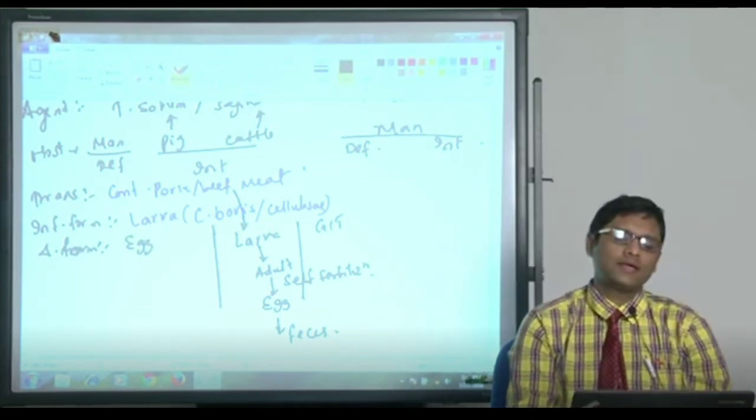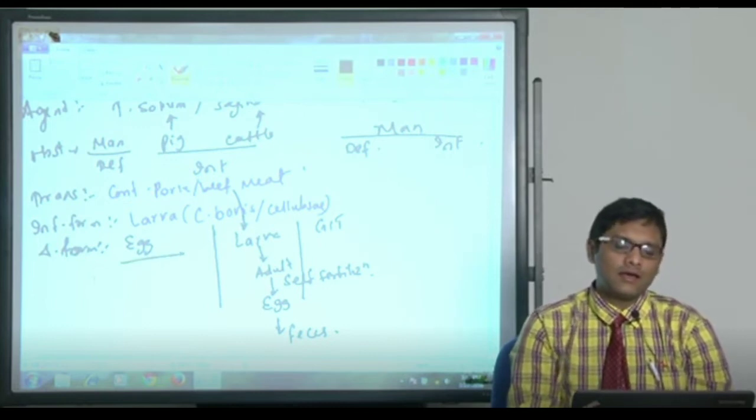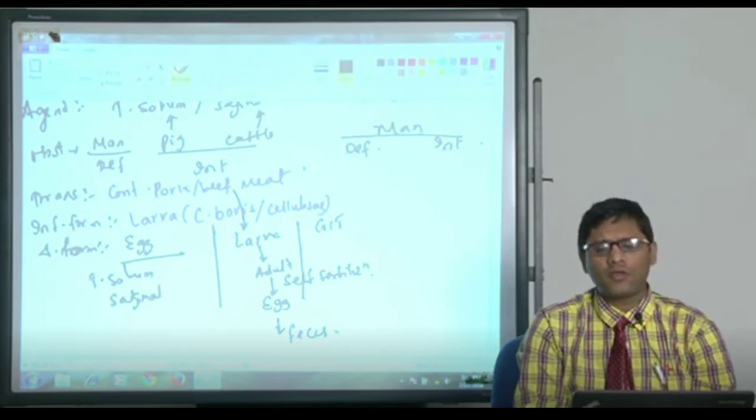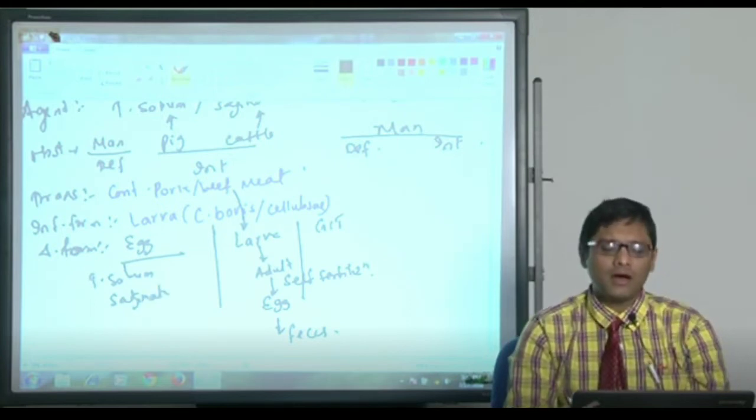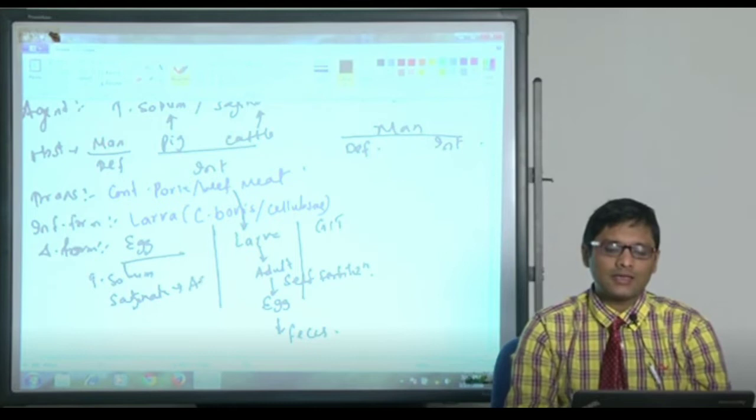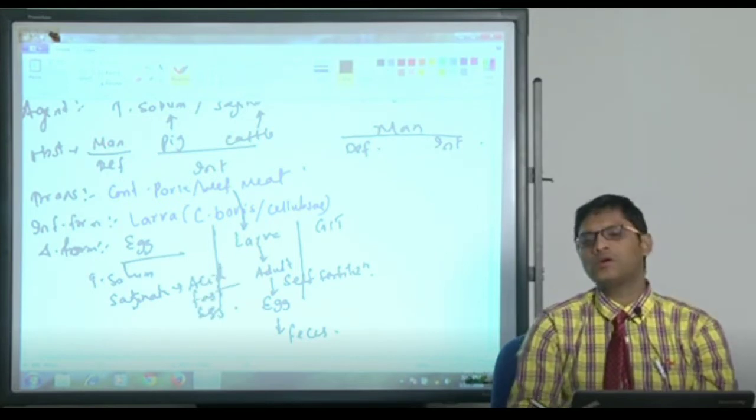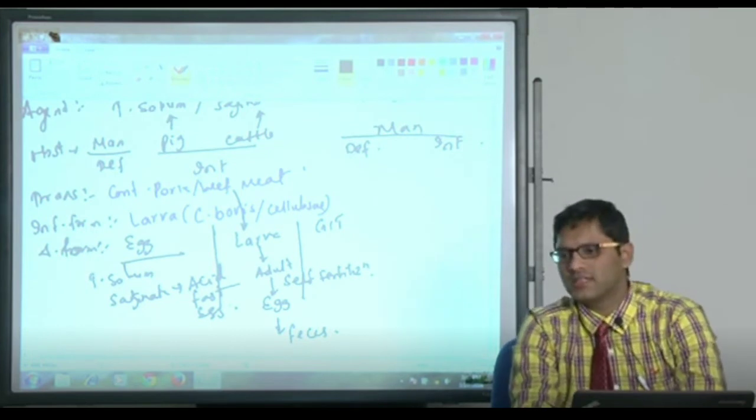Eggs are released in feces and the diagnostic form is egg. You can differentiate in only one way. Tinea solium and saginata eggs are same, you cannot distinguish. Only difference is saginata eggs are acid-fast. Otherwise they are morphologically the same.